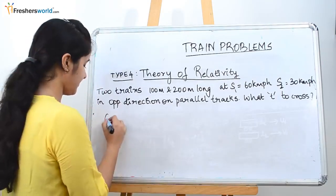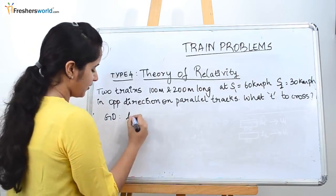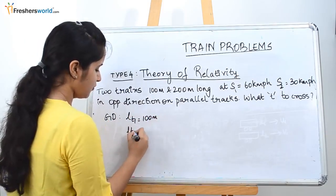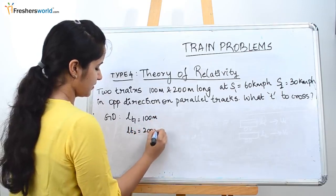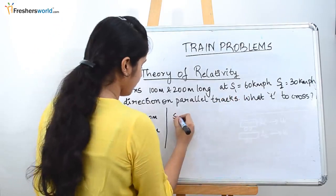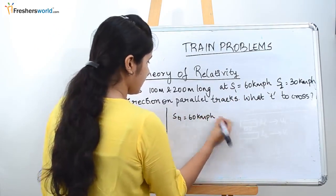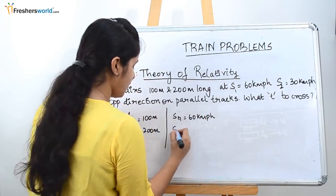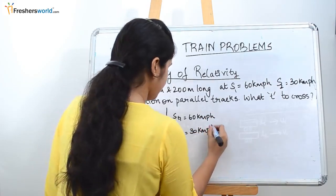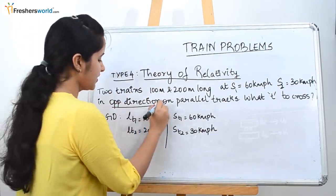As usual, write the given data. The length of train 1 is 100 meters and the length of train 2 is 200 meters. The speed of train 1 is 60 kilometers per hour and the speed of train 2 is 30 kilometers per hour. As you can see in the question, they move in the opposite direction.